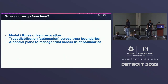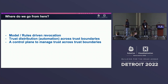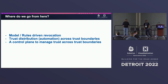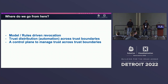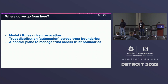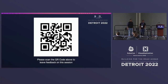Where do we go from here? Some things that absolutely need to be done include a model-driven way to manage trust — rather than manually creating Bundle resources, we want to model that via rules. Trust distribution across trust boundaries is something we want to automate. We've also been working on a control plane to manage trust across different security boundaries. There's a QR code to provide feedback — we appreciate any input you might have, and we can take questions.